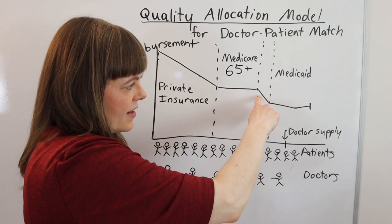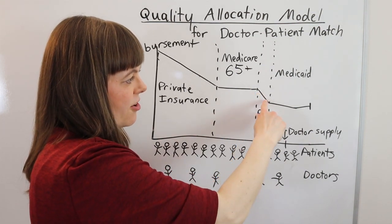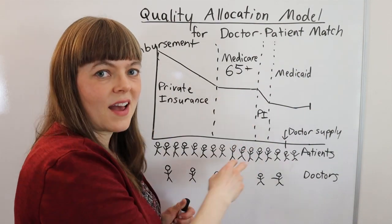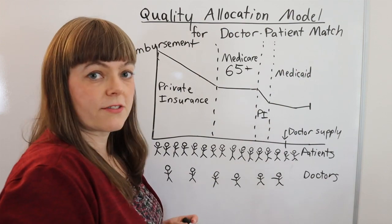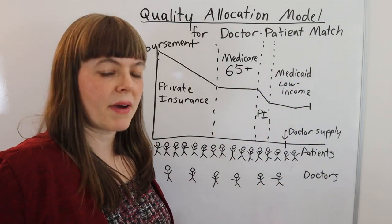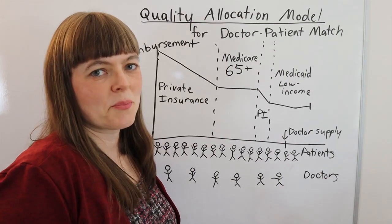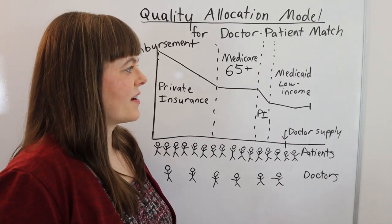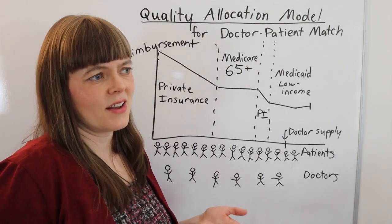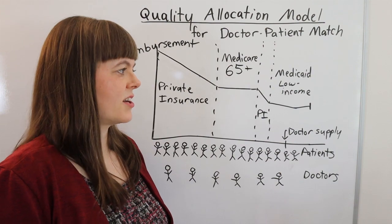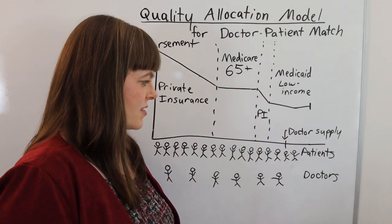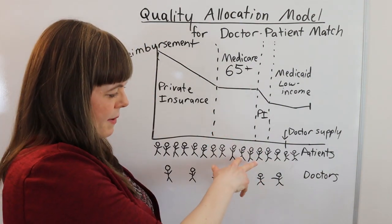I've also added a few private insurance companies that actually reimburse at lower rates than Medicare. And finally over here we have Medicaid, which is for low-income people. In the U.S., Medicaid is run by the states but tends to reimburse poorly — sometimes even below the cost of production. In any case, it tends to be the lowest reimbursing type of insurance, and that maps onto patients on the lower end.